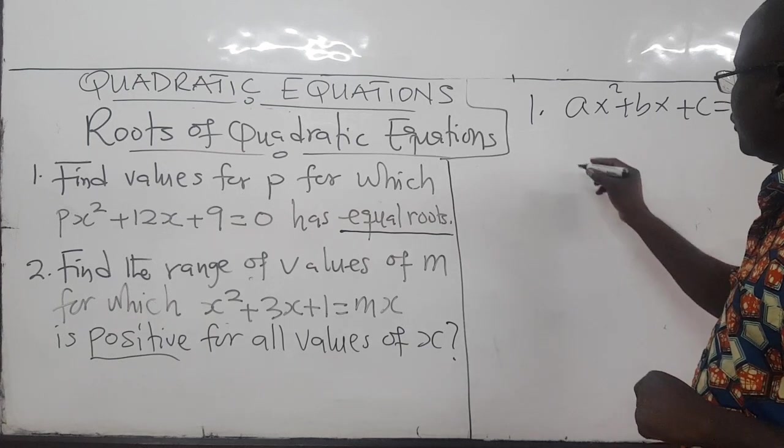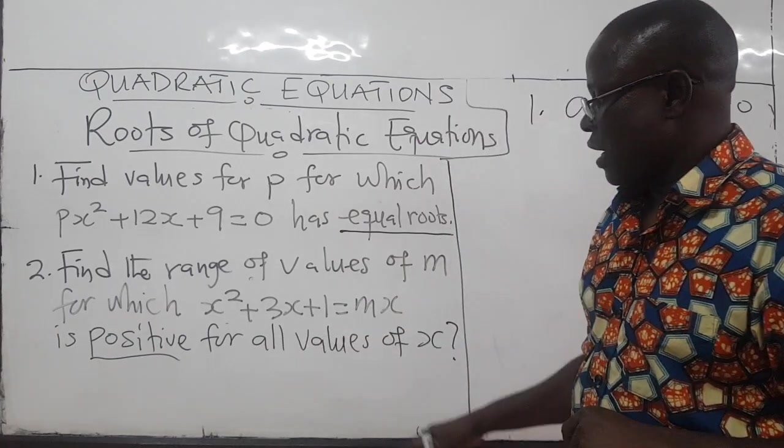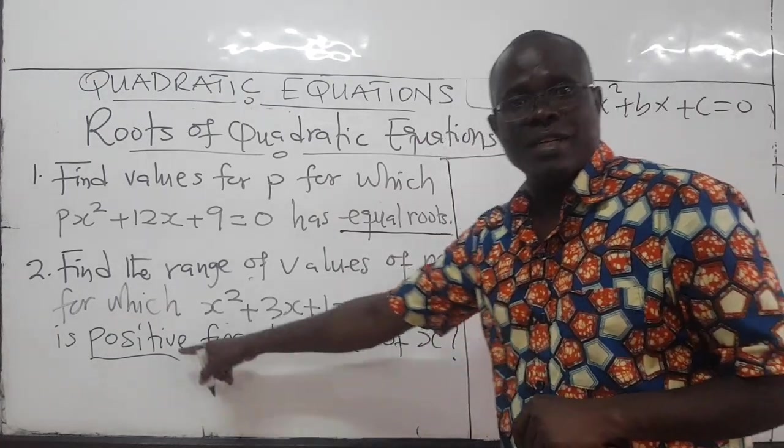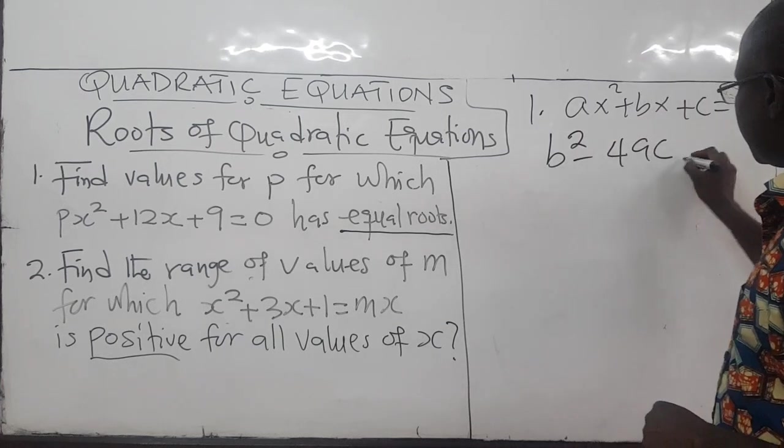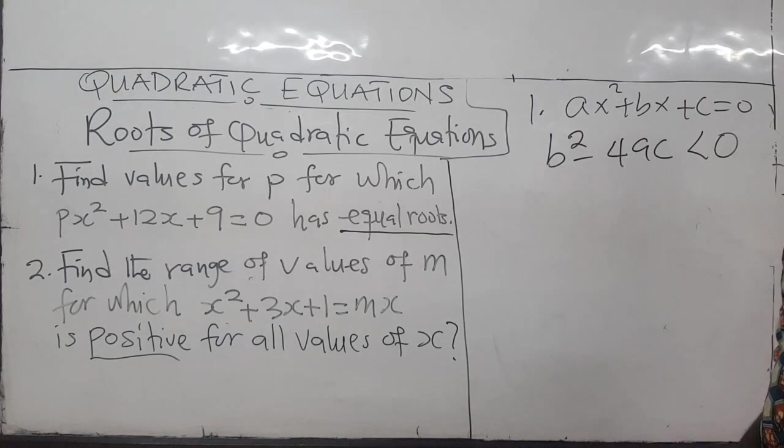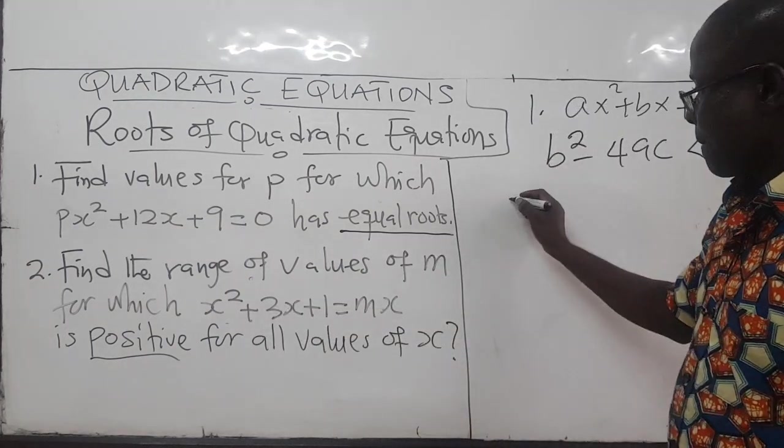So for the case of positive, for the quadratic equation to be positive or to be negative, the discriminant B squared minus 4AC must be less than zero.